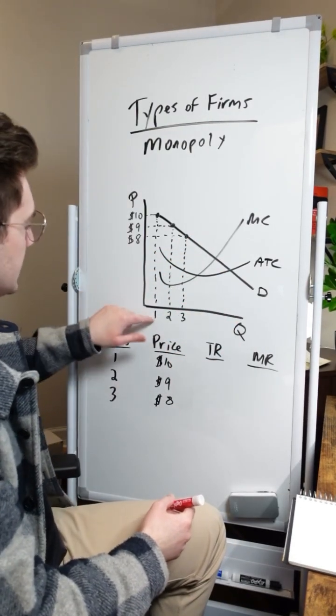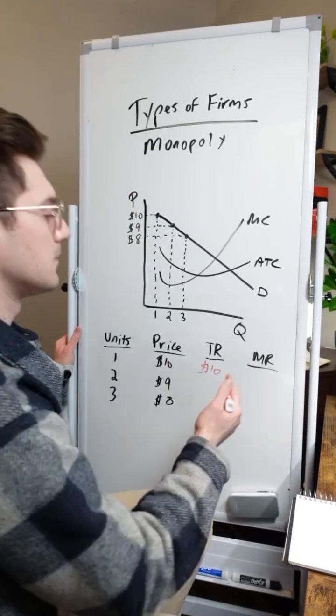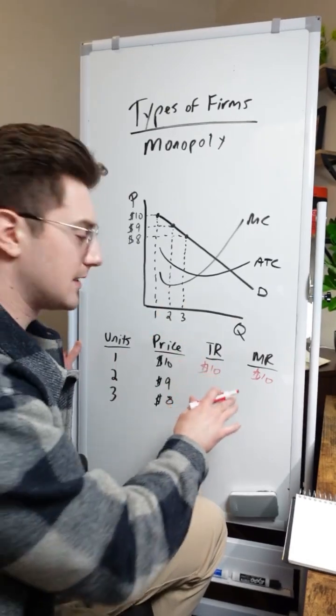So at one unit, we're going to sell at the price of $10 and in turn, incur a total revenue of $10. Meaning that our marginal revenue for that first unit is $10. That's easy enough, nothing too crazy.